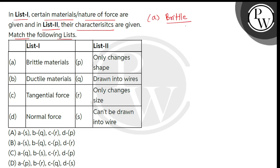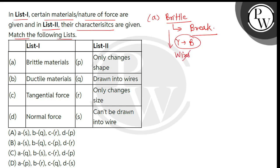Brittle materials, as the name implies, ये जल्दी ही break हो जाएंगे, और इनमें yield point and breaking point के बीच में काफी कम gap होगा। इसलिए brittle materials को हम wire form में draw नहीं कर सकते हैं। तो entry A का answer होगा S.